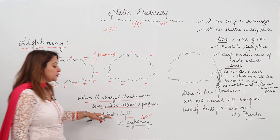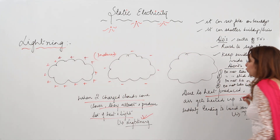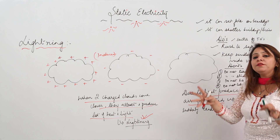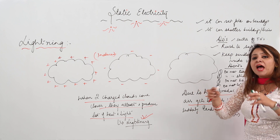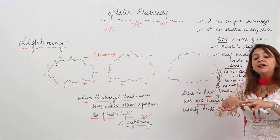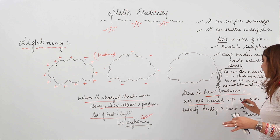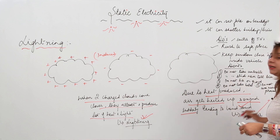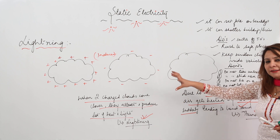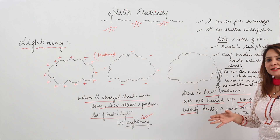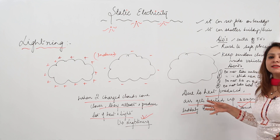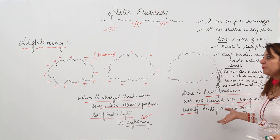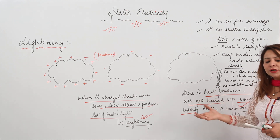How is thunder caused? The tremendous heat produced when two clouds come closer heats up the surrounding air. We know that on heating, air expands. The air expands suddenly, which leads to the production of a loud sound in the atmosphere — that is the thunder. So, oppositely charged clouds attract, produce lot of heat and light which is lightning, and the heat causes air to expand suddenly producing the loud sound which is thunder.